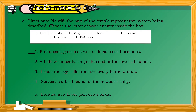Now let's answer a short activity from what's more to do. Directions: Identify the part of the female reproductive system being described. Choose the letter of your answer inside the box. Number 1: Produces egg cells as well as female sex hormones — the correct answer is Letter E. Number 2: A hollow muscular organ located at the lower abdomen — the correct answer is Letter C. Number 3: Leads the egg cells from the ovary to the uterus — the correct answer is Letter A. Number 4: Serves as a birth canal for the newborn baby — the correct answer is Letter B. Number 5: Located at the lower part of the uterus — the correct answer is Letter D. Good job!